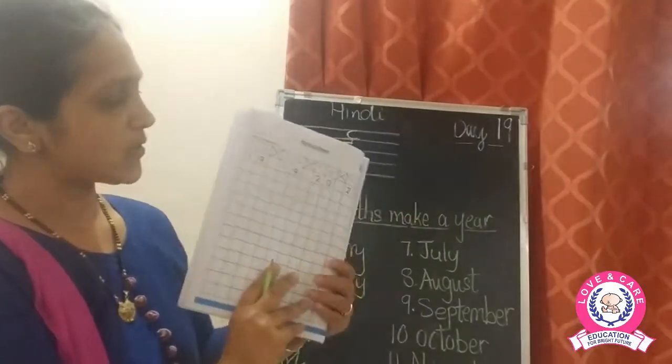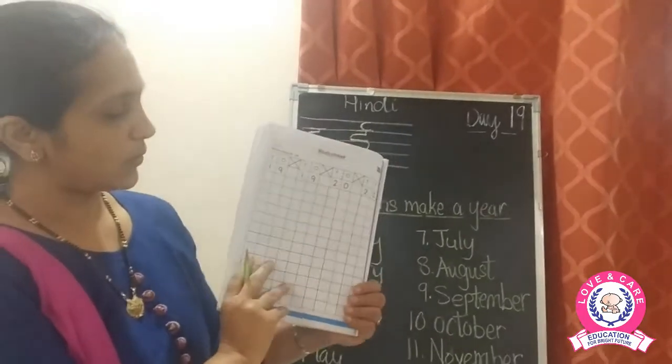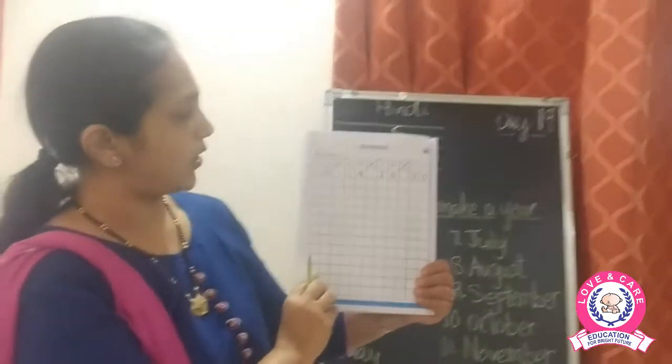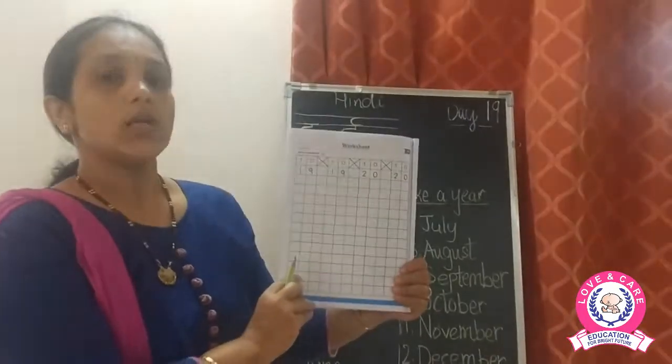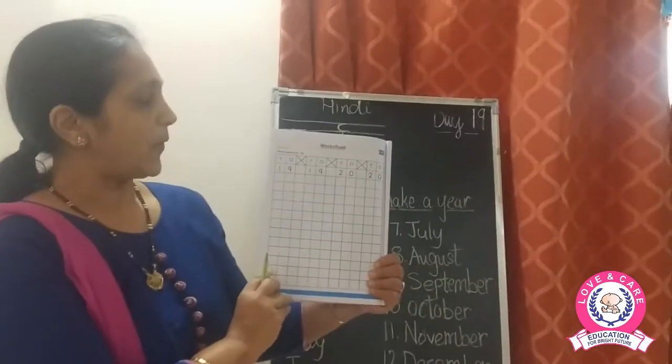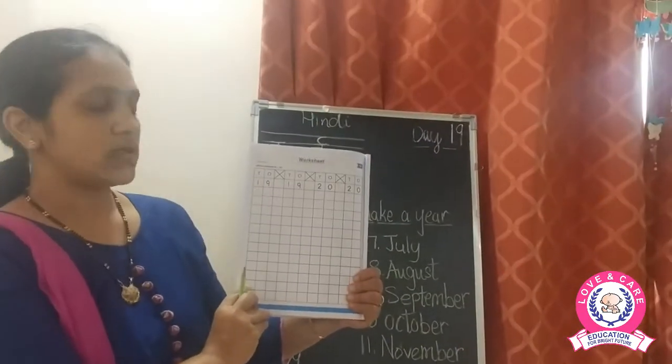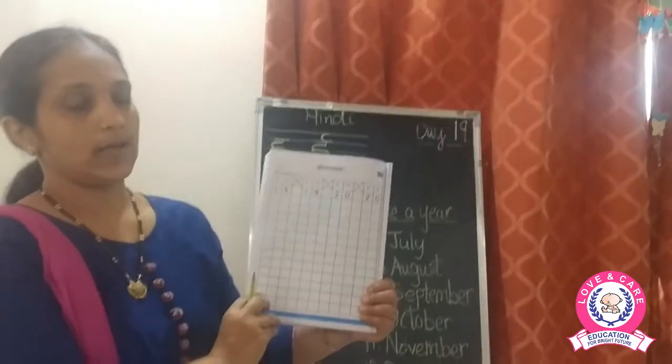Now moving on to the next page — again you have a maths worksheet and a practice page of numbers 19 and 20. You have to write them here.